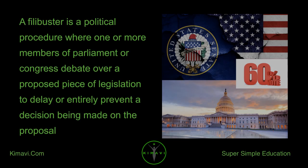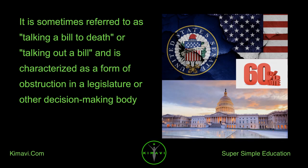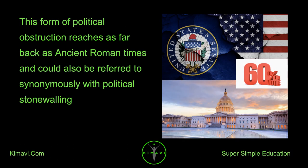A filibuster is a political procedure where one or more members of Parliament or Congress debate over a proposed piece of legislation to delay or entirely prevent a decision being made on the proposal. It is sometimes referred to as talking a bill to death or talking out a bill, and is characterized as a form of obstruction in a legislature or other decision-making body. This form of political obstruction reaches as far back as ancient Roman times and could also be referred to synonymously with political stonewalling.